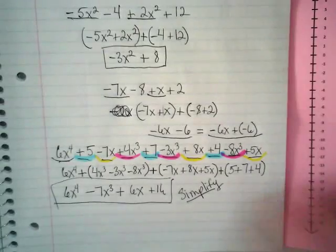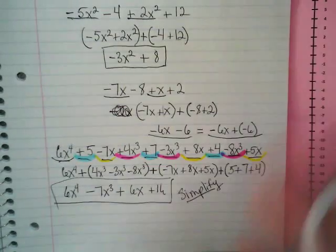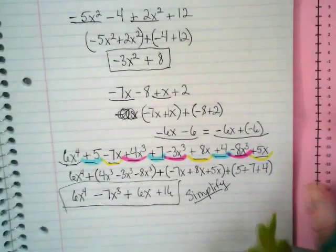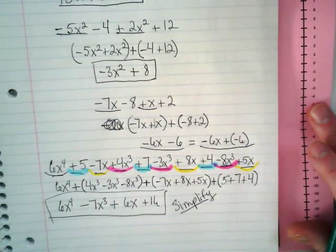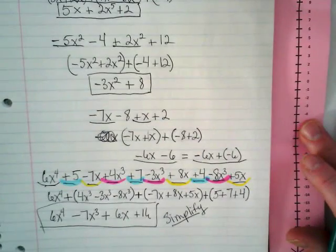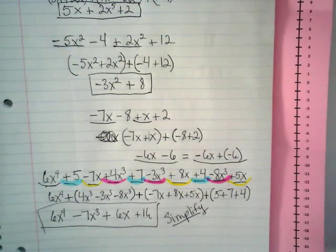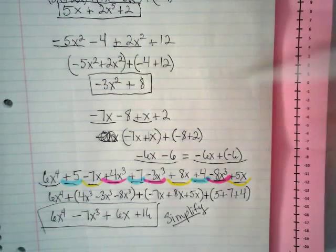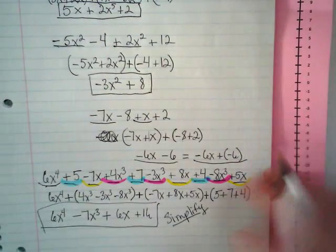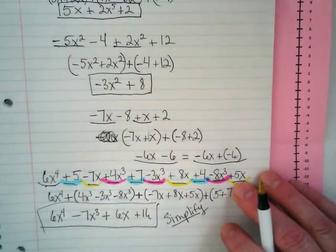I'm going to give you some more problems to work on now — I'll just make them up. It's a good idea to have the number line out. When we're just combining like terms and not doing distributive property, we're only going up and down the number line. Distributive property needs multiplication; these are just addition and subtraction on the number line.